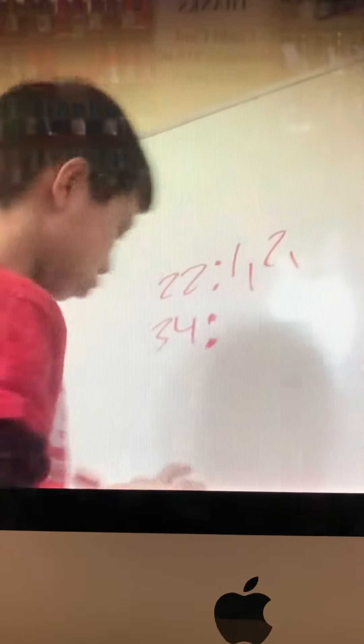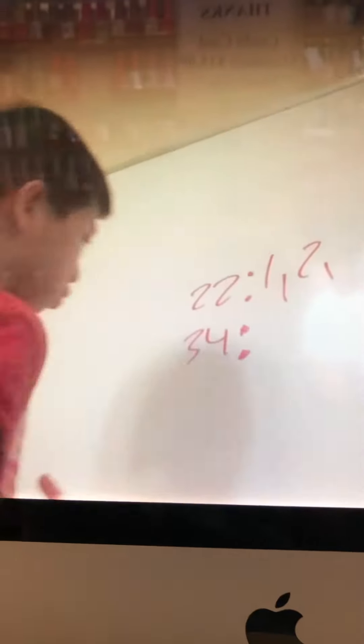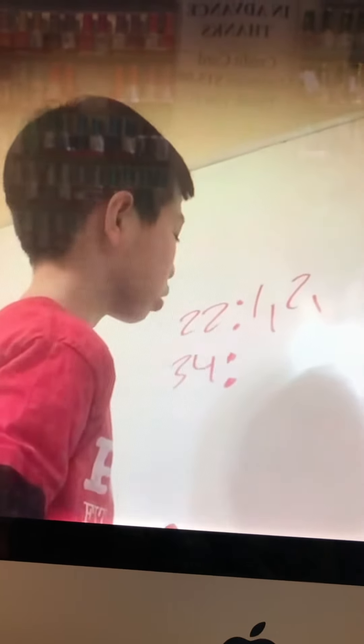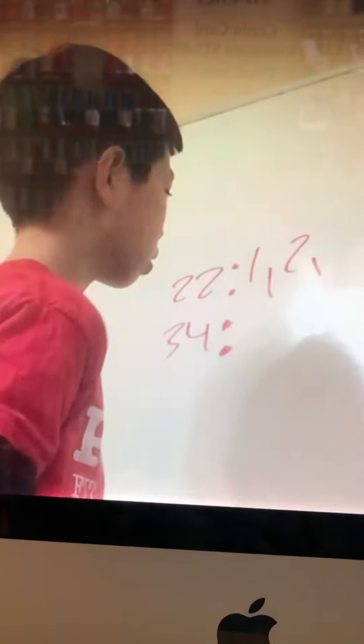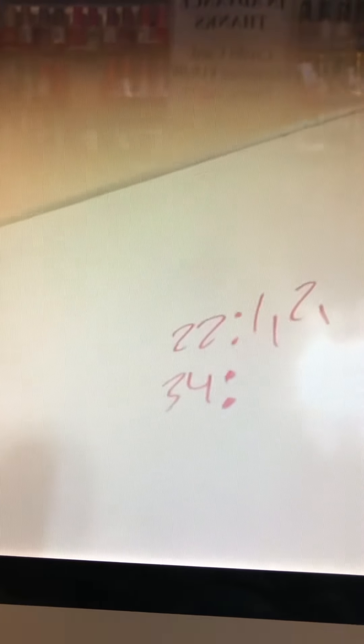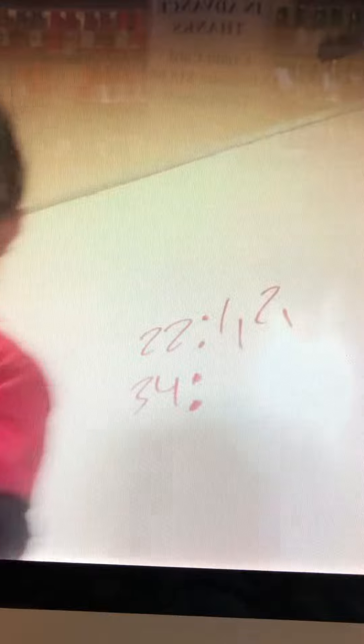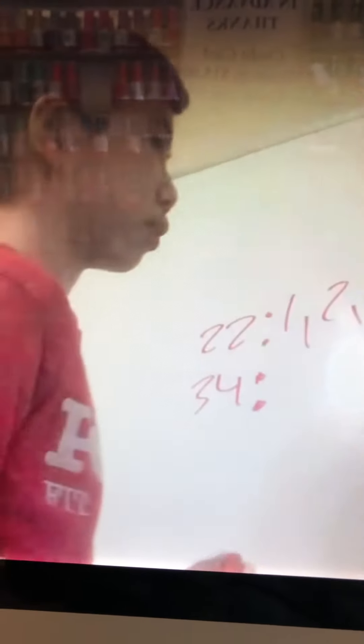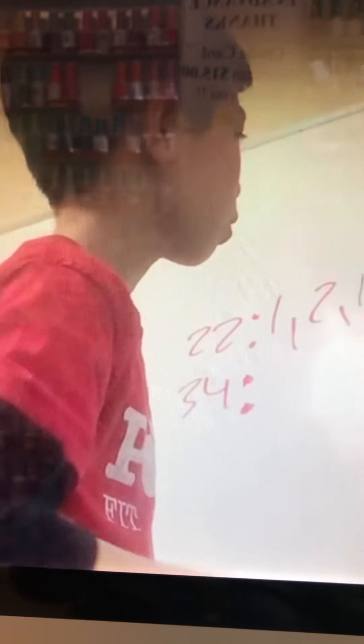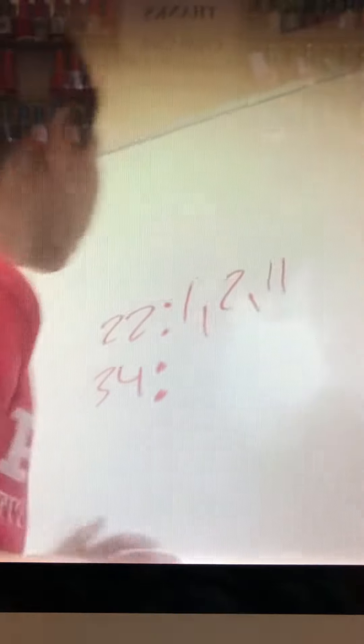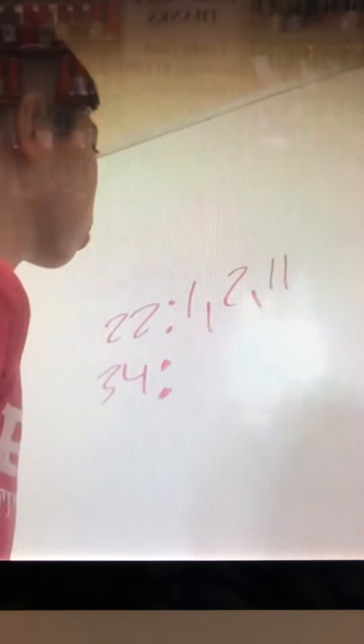Phyllis is working on the factors for number 22. So we have number 1 and number 2. 11 can go in. Yeah. That's it.